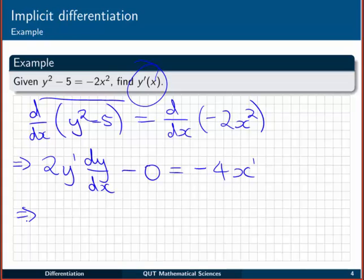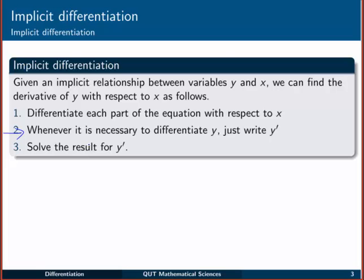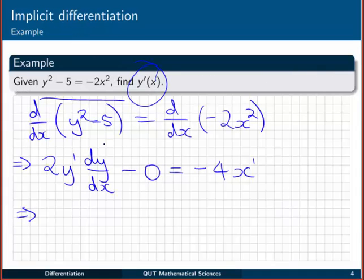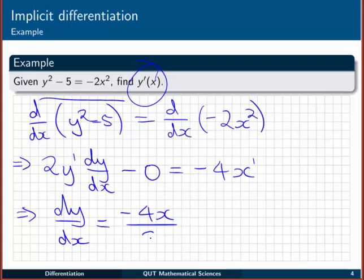The last step on the previous slide said solve the result for y dashed. So I just need to rearrange for y dash or dy dx. And I should get dy dx is equal to minus 4x over 2y. And of course cancelling down, we just have minus 2x on y. It's self-implicit relationship, but that's perfectly fine. It tells us the derivative of y with respect to x is minus 2x over y. And that's the mechanics of the idea.